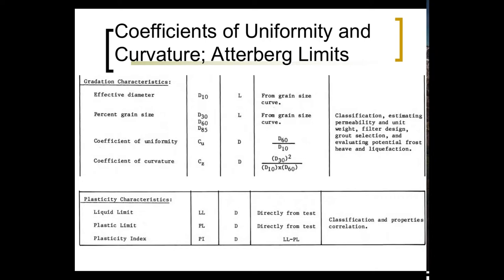From these you compute the coefficient of uniformity, Cu, which equals D60 over D10, and the coefficient of curvature, Cc, which equals D30 squared over D10 times D60. Both are used for classification of cohesionless coarse-grained soils. On the other end, you have your Atterberg limits: the liquid limit (LL), the plastic limit (PL), and the plasticity index (PI), which is the difference of the two. Make sure when you read your problem that you're not giving the plastic limit when they're asking for the plasticity index or vice versa — that's an easy mistake to make.